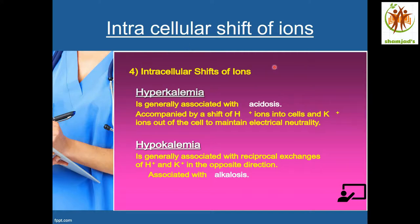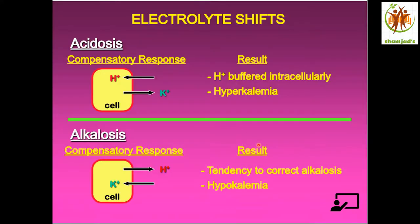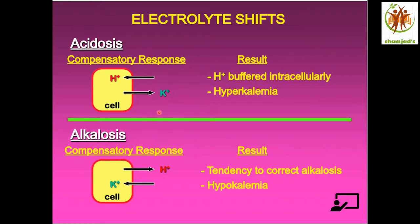Intracellular shifts of ions: as a result of these shifts, we get hyperkalemia or hypokalemia. In the case of acidosis, as a compensatory response, the H+ ions move into the cell and K+ ions move out from the cell into the bloodstream to maintain electrical neutrality. H+ ions are buffered intracellularly, resulting in hyperkalemia, because too many potassium ions come out of the cell into the bloodstream.